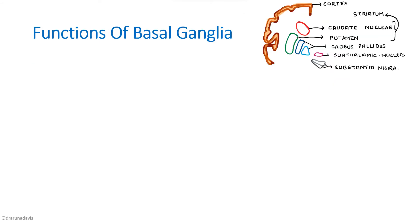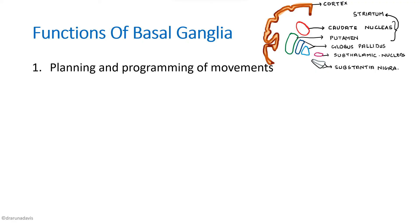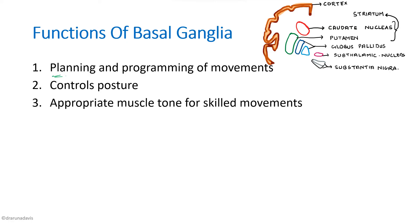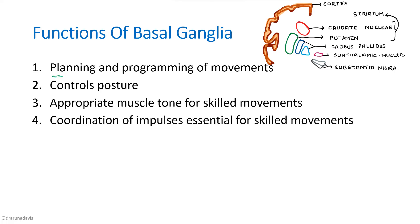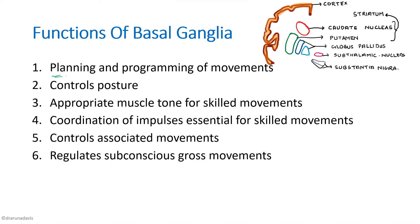Now let us see the functions of the basal ganglia. It was seen that the basal ganglia neurons fire mostly before a movement, that is why we say it is involved in the planning and programming of movements — they basically get ready to do a movement. It will provide the proper posture and tone which is required for the movement. It also coordinates all the impulses essential for skilled movements and controls the associated movements — for example, when we are walking our hands are also moving, those are the associated movements. It also regulates subconscious gross movements and is helpful in cognitive functions.